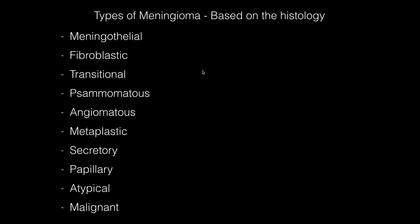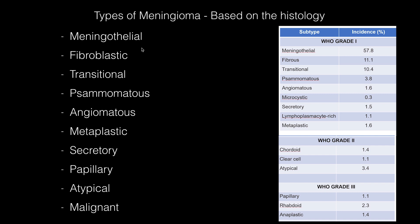There are many types of meningioma based on histology, including meningothelial meningioma, fibroblastic meningioma, and transitional meningioma. These three are the most common and together constitute almost 80% of all types of meningiomas.